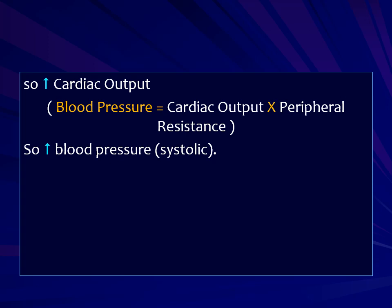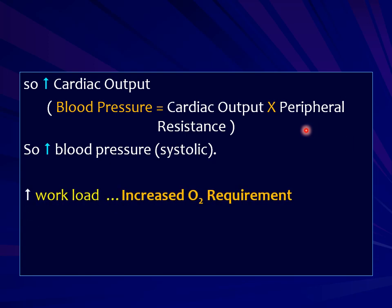Blood pressure is a product of cardiac output and peripheral resistance. If there is only an increase in cardiac output, the systolic part of blood pressure increases. If there is also an increase in peripheral resistance, that adds to an increase in the diastolic part as well. Peripheral resistance depends on the tone of arterioles — vasoconstriction of arterioles leads to increased peripheral resistance and increased diastolic blood pressure. Due to all these factors — increased heart rate, stroke volume, force of contraction, and cardiac output — the workload on the heart is increased.